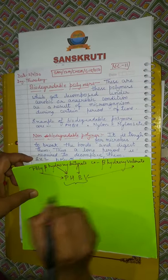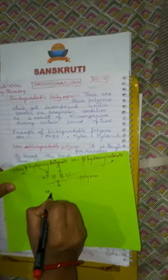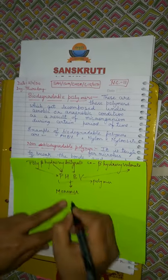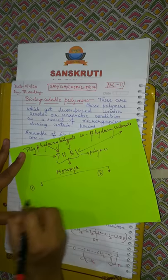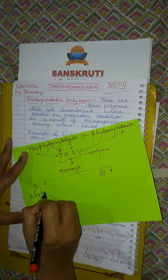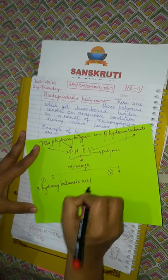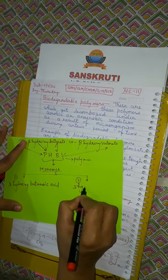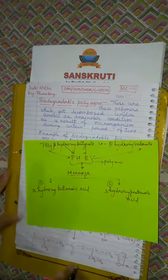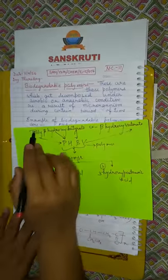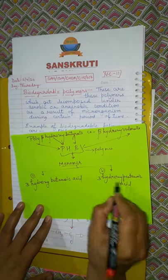We now have the name of the polymer. But what are the monomers of this polymer? This polymer has two monomers. One is 3-hydroxybutanoic acid, and the other is 3-hydroxypentanoic acid.